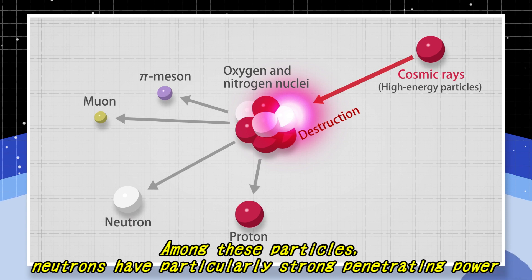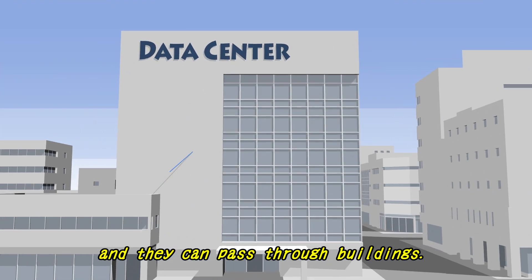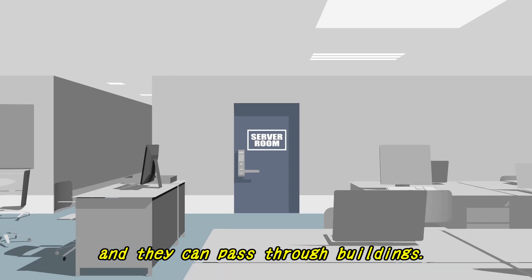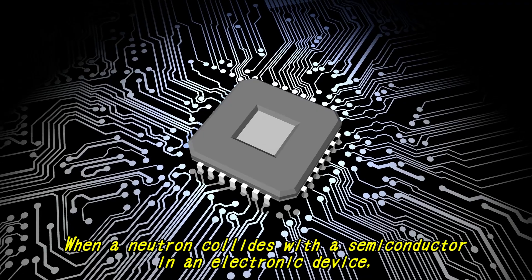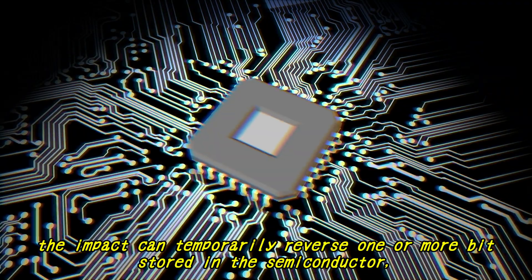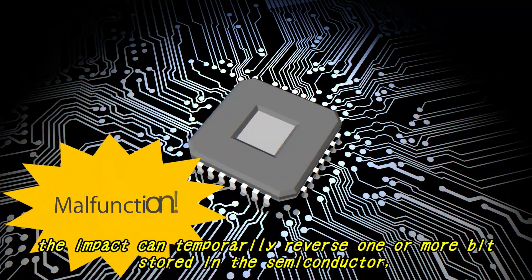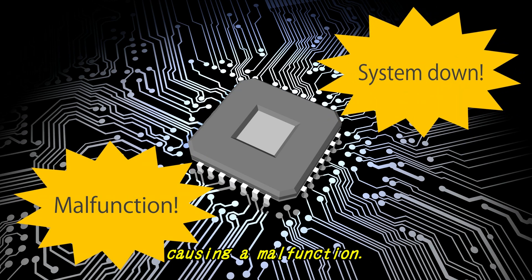Among these particles, neutrons have particularly strong penetrating power, and they can pass through buildings. When a neutron collides with a semiconductor in an electronic device, the impact can temporarily reverse one or more bits stored in the semiconductor, causing a malfunction.